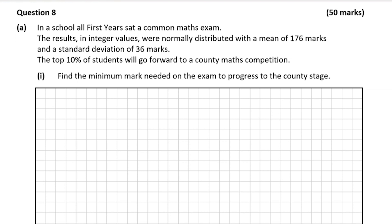This is a statistics and probability question worth 50 marks. We're told in part A that all first years in the school sat a common maths exam and the results in integer values were normally distributed with a mean of 176 marks and a standard deviation of 36 marks. The top 10% of students will go forward to a county maths competition. In part one we're being asked to find the minimum mark needed to progress to the county stage.